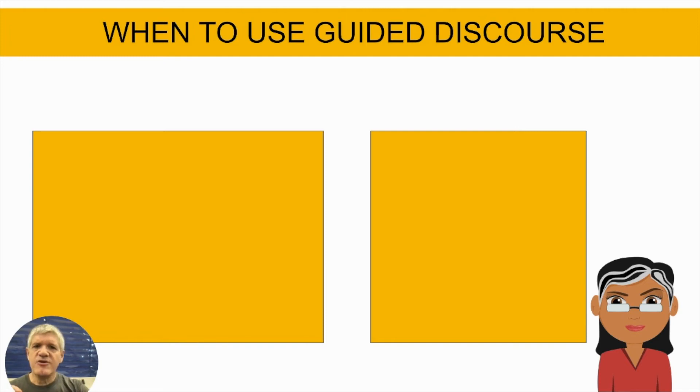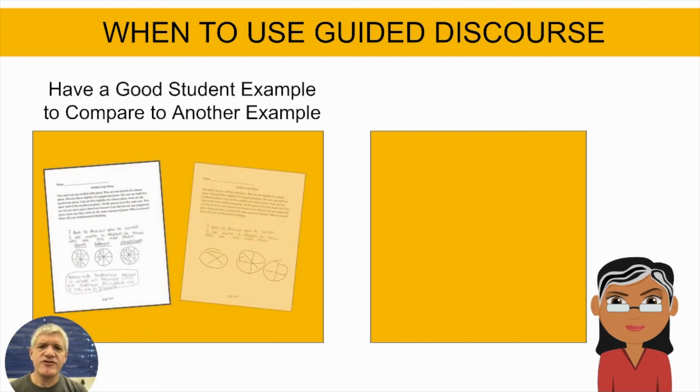In order to have guided discourse, the first thing you need to have is two examples. You need to have a good example, an exemplar, and you need to have one that's not so good which the students can look at those and discuss them.